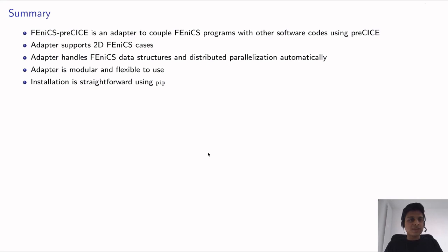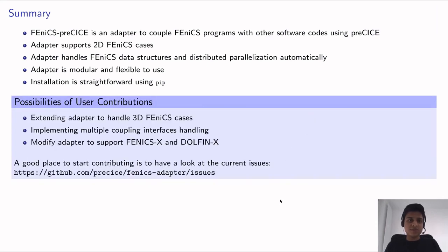Here is a short summary. The FEniCS-preCICE adapter is used to couple FEniCS with other simulation codes using preCICE. Currently the adapter supports 2D FEniCS cases. FEniCS data structures and distributed parallelization with MPI are handled automatically. The adapter is modular and flexible in design, and installation is straightforward using pip. For those wishing to contribute, topics include: extending the adapter to handle 3D FEniCS cases, implementing multiple coupling interface handling, and modifying the adapter to support FEniCSx and DOLFINx — the upcoming new APIs for the FEniCS project. A good place to start is to look at the current issues in the FEniCS adapter repository.